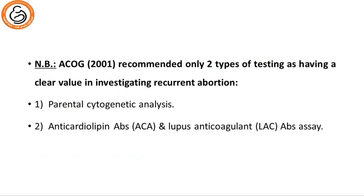The American College of Obstetrics and Gynecology 2001 recommended only two types of testing as having clear value in investigating recurrent abortion: parental cytogenetic analysis, and anti-cardiolipin and lupus anticoagulant antibody assay for cases of suspected antiphospholipid syndrome. These are the only two recommended evaluations.